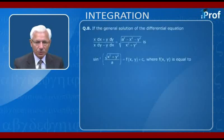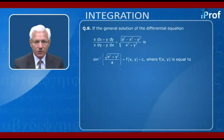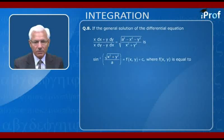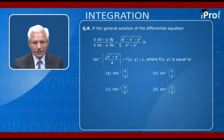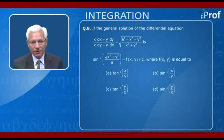Next problem: if the general solution of (x dx + y dy)/(x dy − y dx) = √(a² − x² − y²)/(x² + y²) is sin⁻¹(√(x²+y²)/a) = f(x,y) + c, the options for f(x,y) are: (a) tan⁻¹(x/y), (b) sin⁻¹(x/y), (c) tan⁻¹(y/x), and (d) sin⁻¹(y/x).